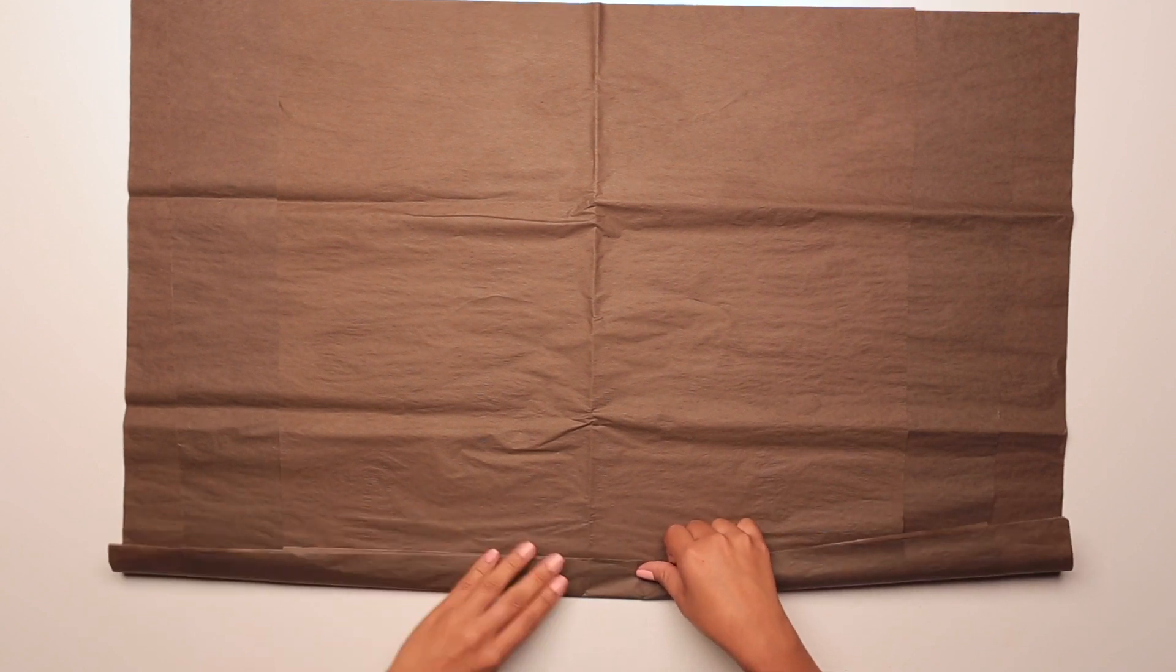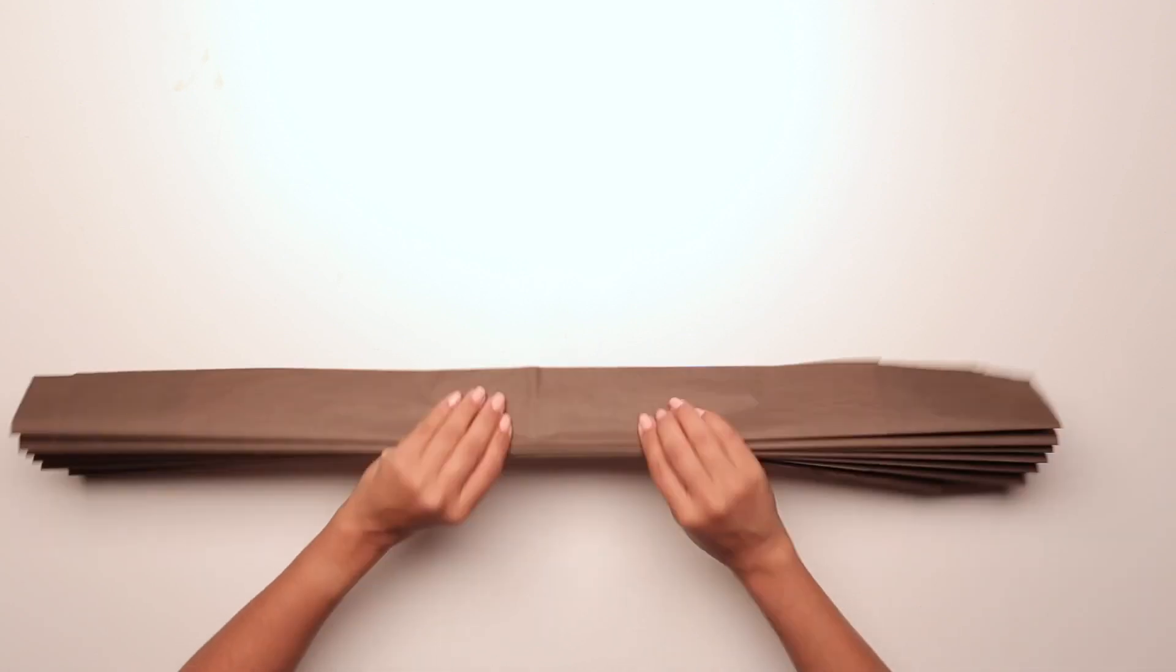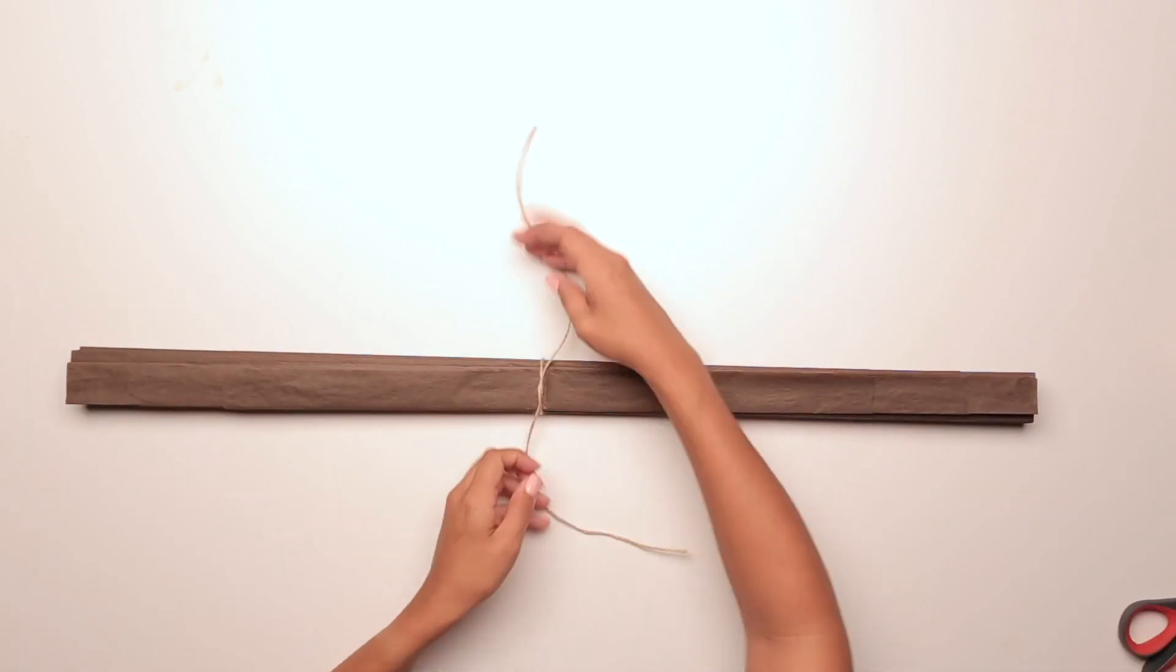Next, fold the entire 10 sheet stack of brown tissue paper back and forth with 1 inch folds accordion style. Tie the twine around the center of the tissue paper.